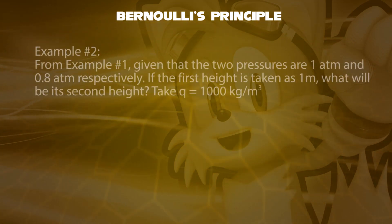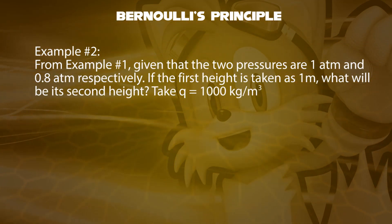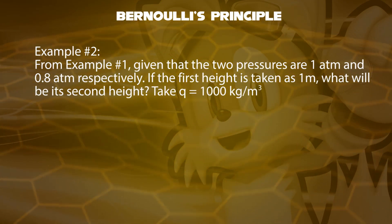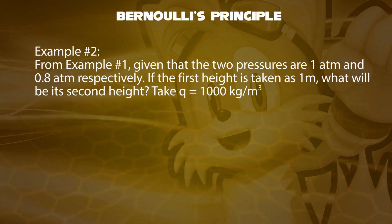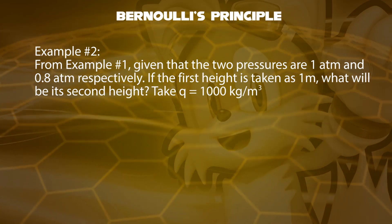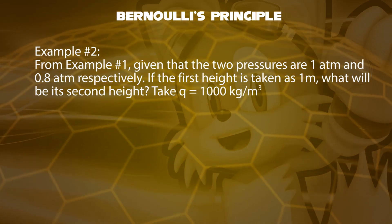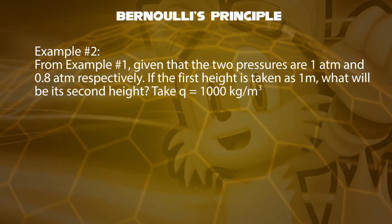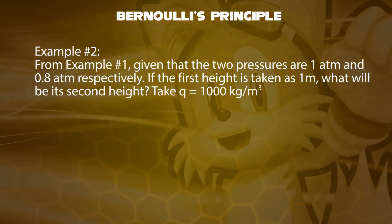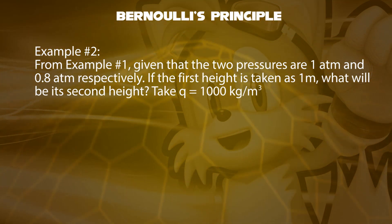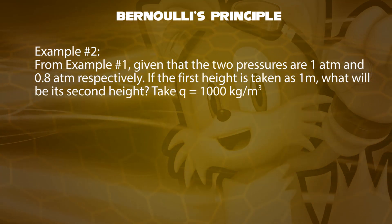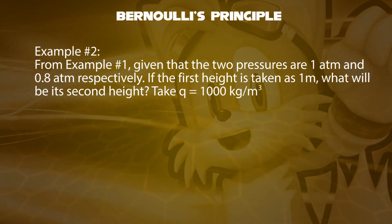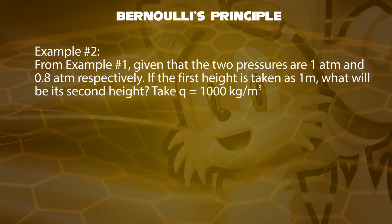And here is the second example, with the rest of the values the same, given that the two pressures are 1 atm and 0.8 atm respectively. If the first height is taken as 1 meter, what will be its second height? Take density of water Q as 1000 kilograms per cubic meter.